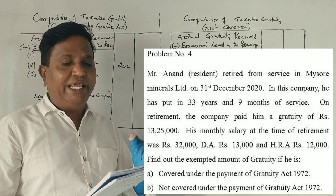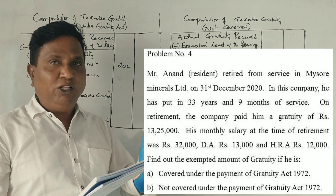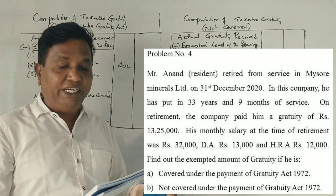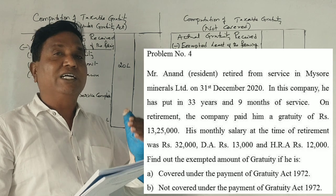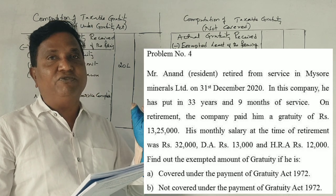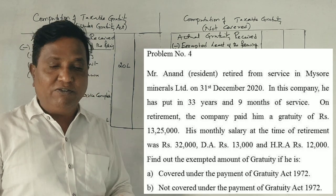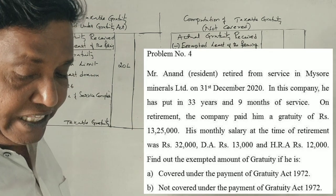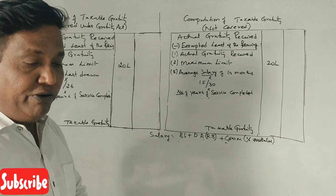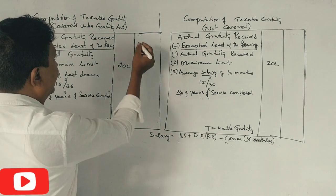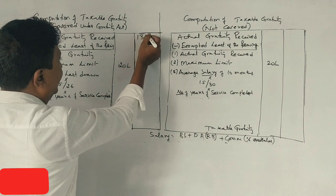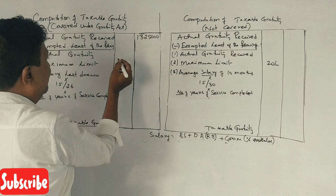Find out the exempted amount of gratuity, or taxable amount of gratuity, if this person is covered under Payment of Gratuity Act of 1972, or not covered under Payment of Gratuity Act. Now, the retirement benefit of gratuity is 13,25,000.